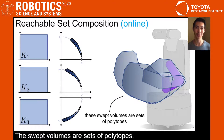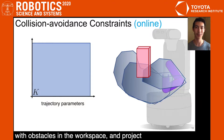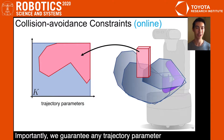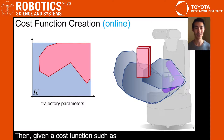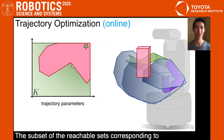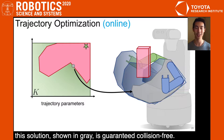The swept volumes are sets of polytopes. Next, we intersect the polytope reachable sets with obstacles in the workspace and project the intersection into parameter space to identify polytopic collision avoidance constraints. Importantly, we guarantee any trajectory parameter feasible to these constraints is provably collision-free. Then, given a cost function such as reaching a desired configuration, we perform trajectory optimization. The subset of the reachable sets corresponding to this solution, shown in gray, is guaranteed collision-free.